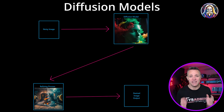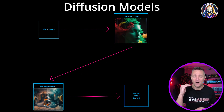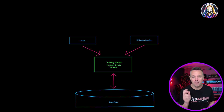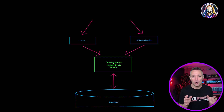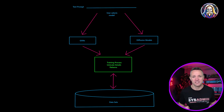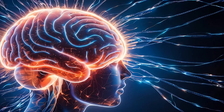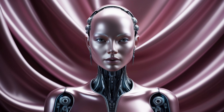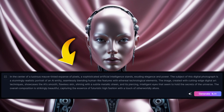Diffusion models work a little differently — they take a noisy image and constantly refine it until it reaches the desired output. These models have been trained on huge datasets, learning intricate details and patterns to produce high quality, beautiful images all from simple text descriptions. When you input a text prompt, the AI processes it and uses all of its learned knowledge to generate an image that matches the description with remarkable accuracy.